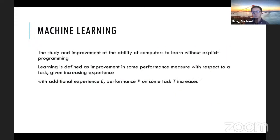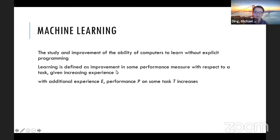More formally: learning is an improvement in performance on a task achieved through increased experience. Stated scientifically: with additional experience E, performance P on some task T increases. This gives us the three things to concentrate on: experience, performance, and task.